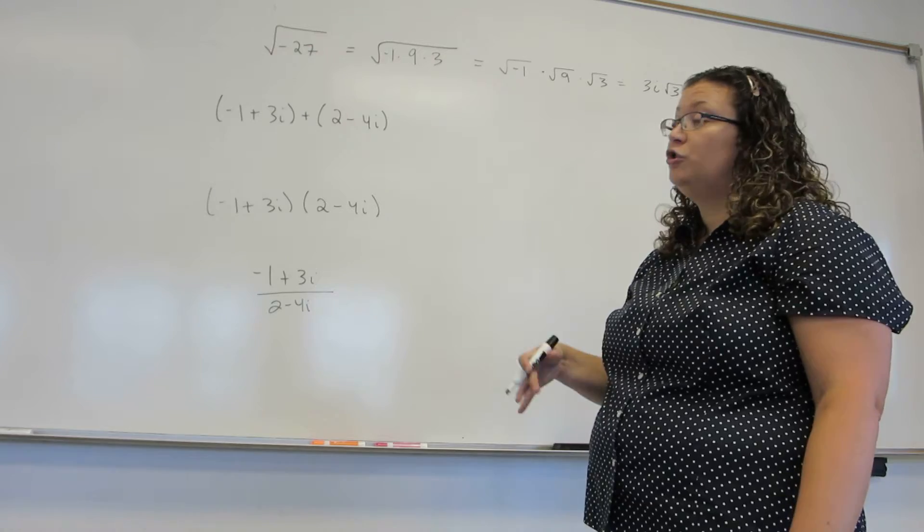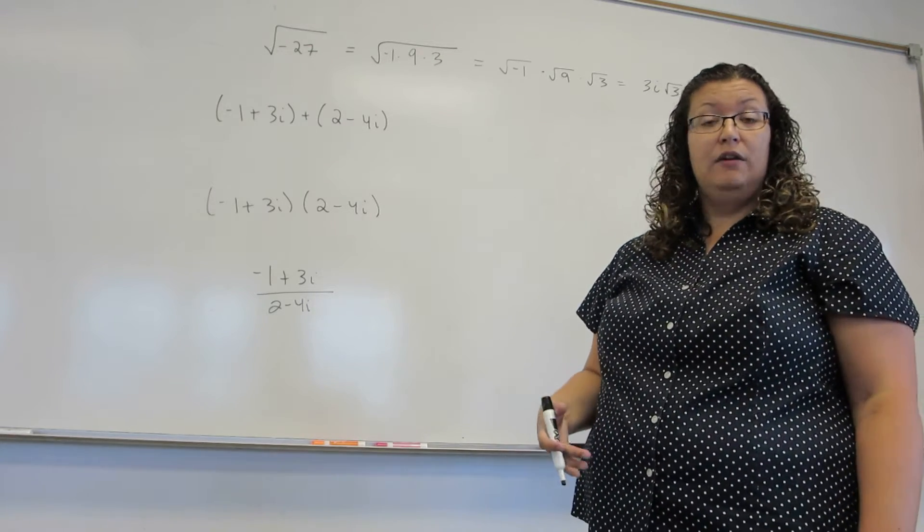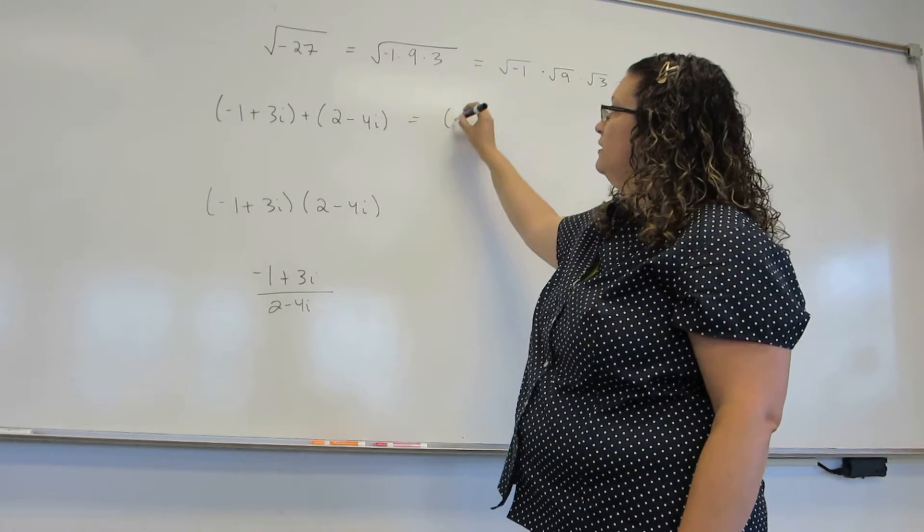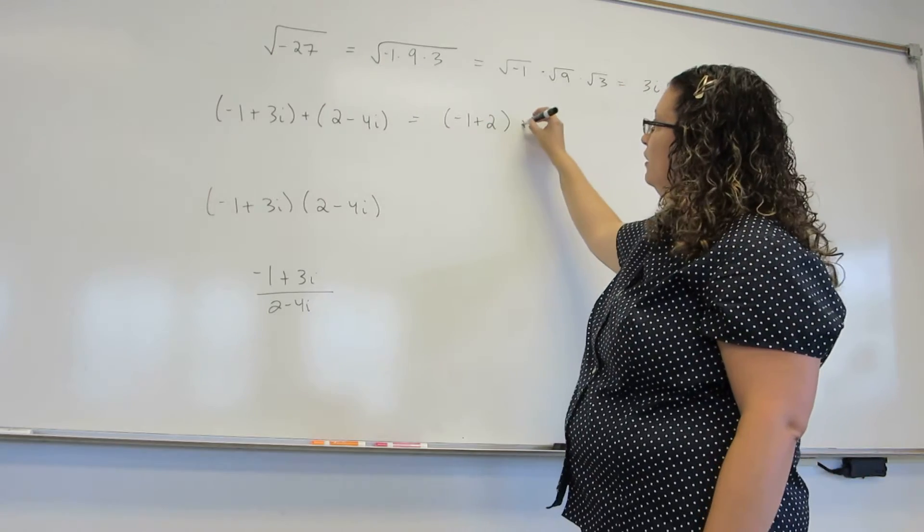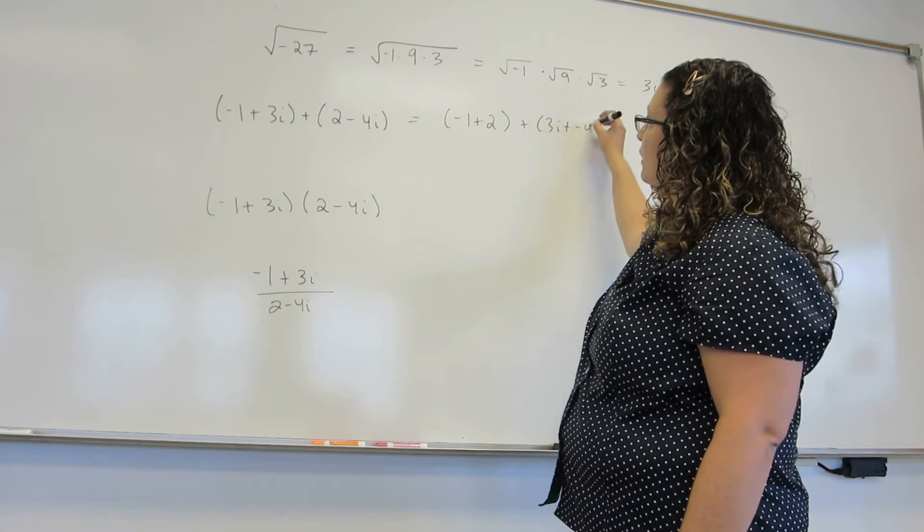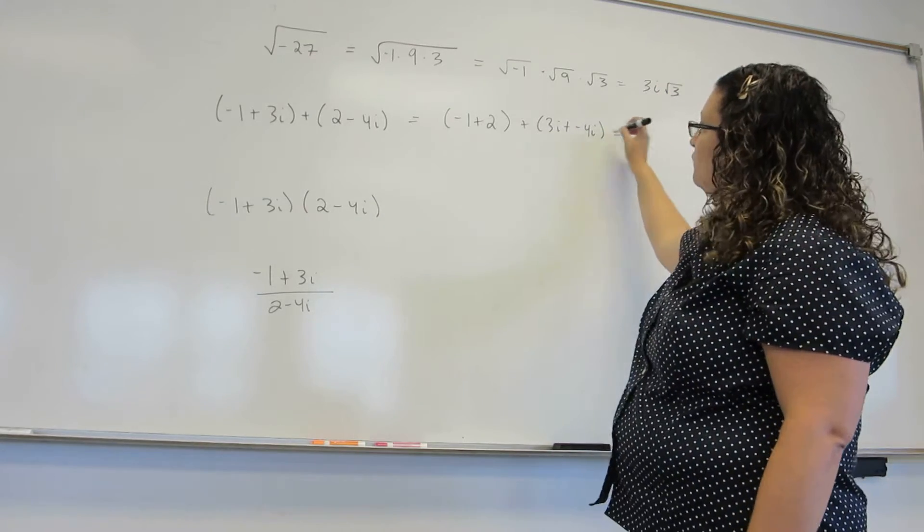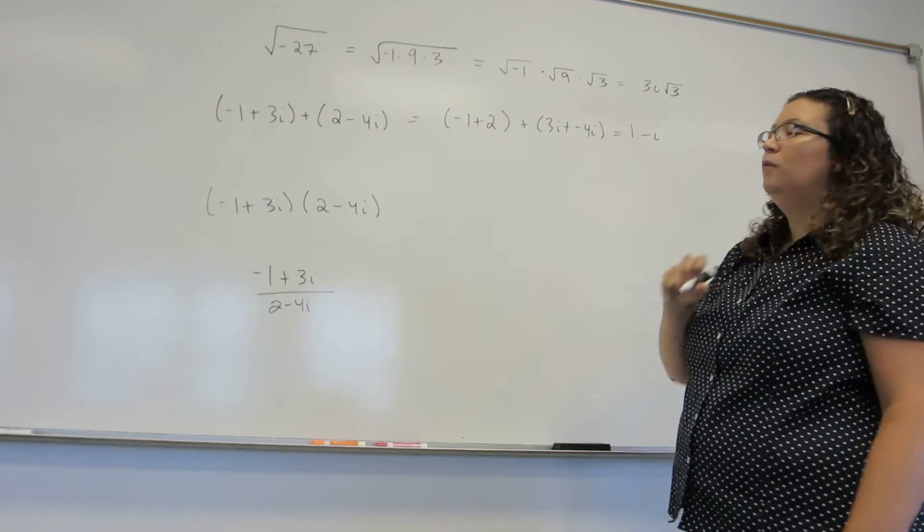In this case, we're treating the i like a variable, like we would an x or a y. And we just add the terms with an i and add the terms without an i. So in this case, the negative 1 and the 2 are going to be added together. And the 3i and the minus 4i are going to be added together. To give us a final answer of 1 minus 1i.